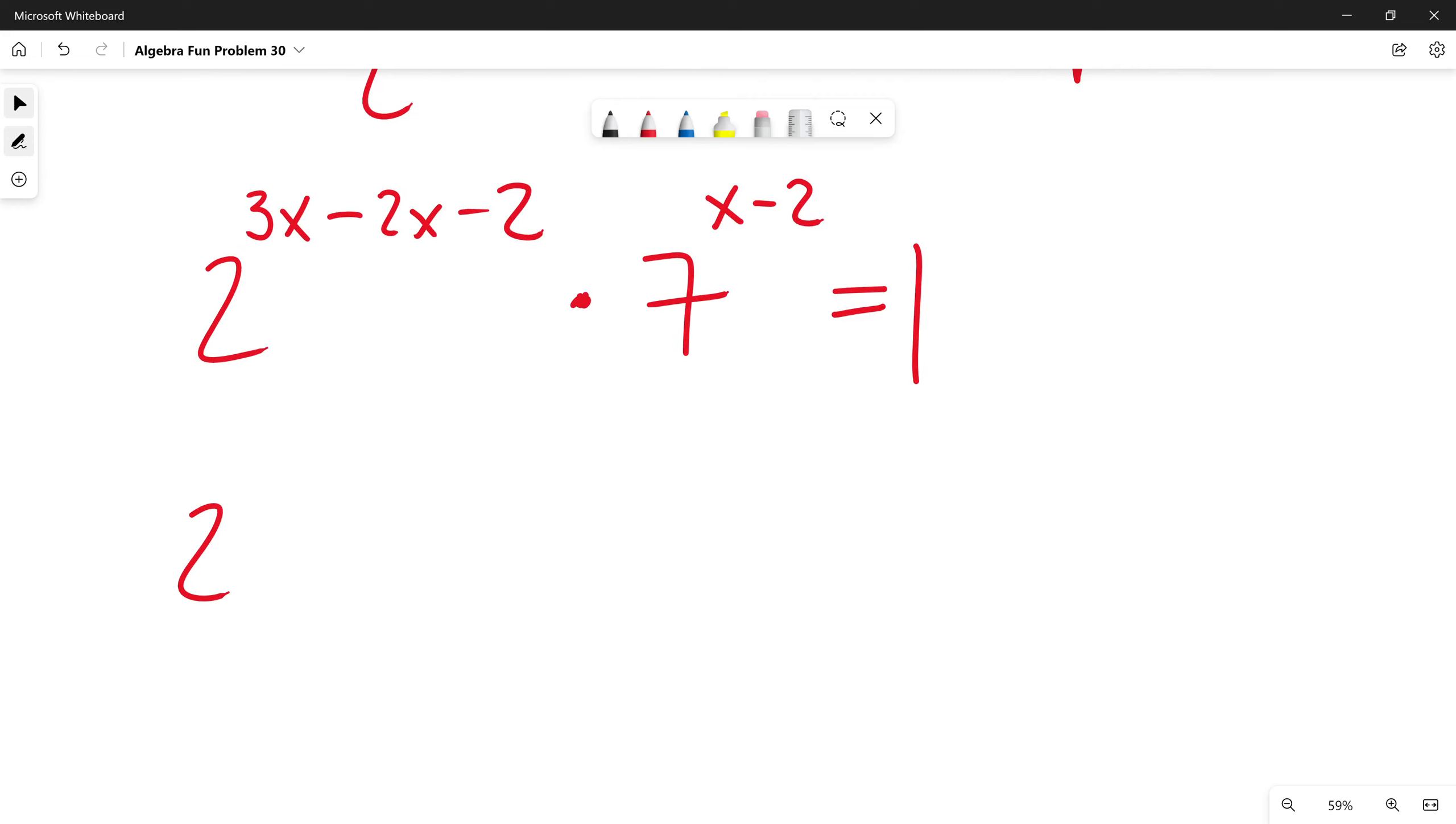I will simplify that exponent: 3x minus 2x minus 2. This will be x minus 2, times 7 to the power of x minus 2. This is equal to 1.